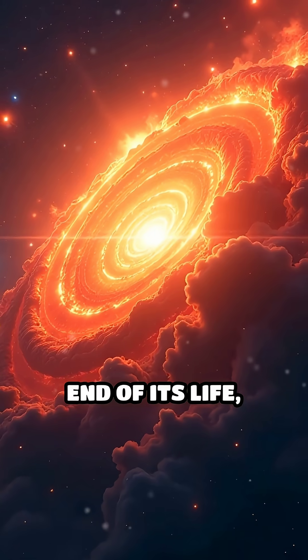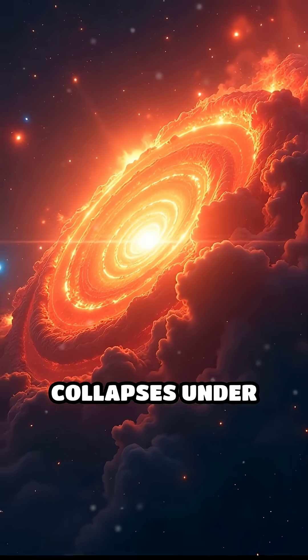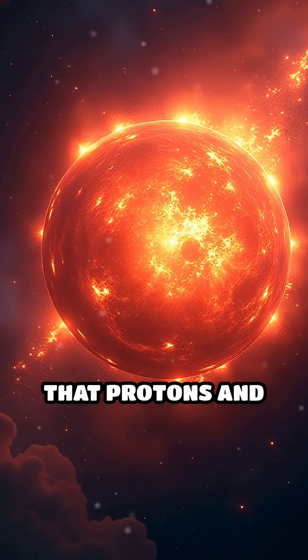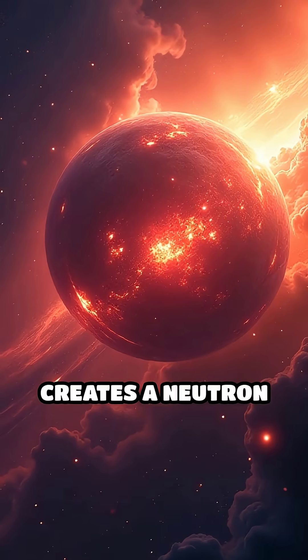When a massive star reaches the end of its life, it explodes in a supernova, and its core collapses under gravity so intense that protons and electrons merge to form neutrons. This process creates a neutron star.